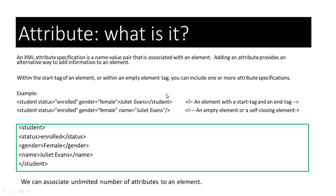Now let's look at attributes. What is an attribute? An SML attribute specification is a name-value pair that is associated with an element. By adding an attribute, we provide an alternative way to add information to an SML element. Within the start tag of an element or within an empty element tag, you can include one or more attribute specifications.